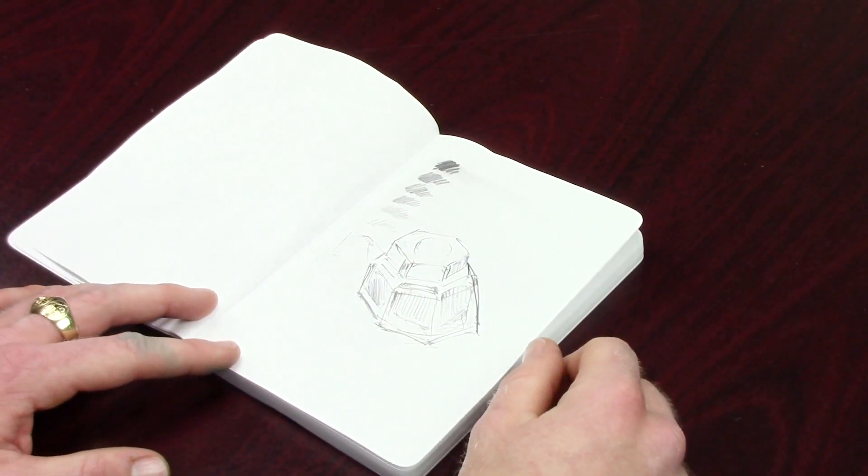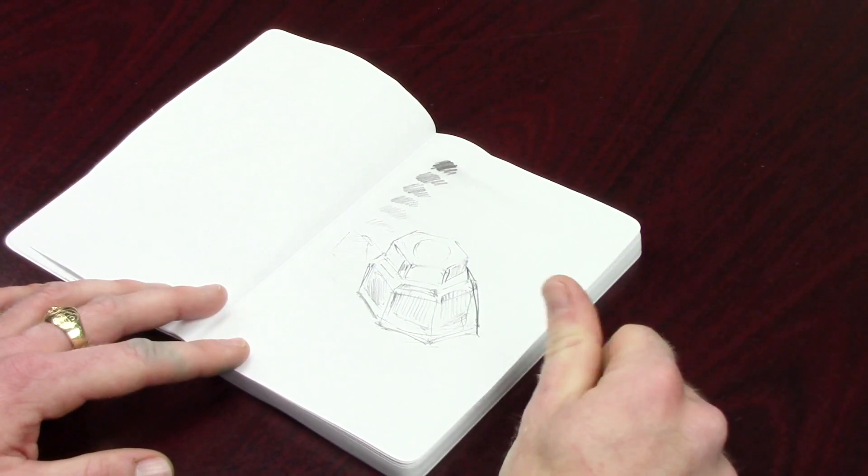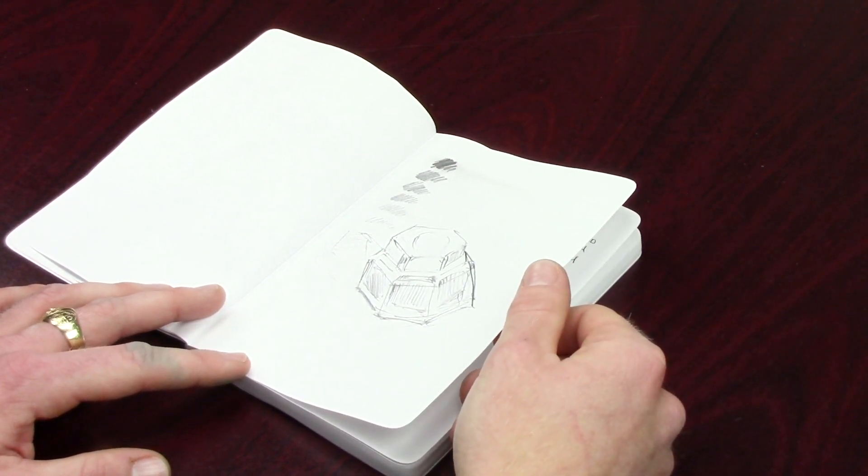And then for pencils, nice toothiness. There was some smearing. This is a Blackwing pencil so when you push really hard there's gonna be some pretty heavy smearing but overall not too bad. So if you're worried about your drawings getting smushed up, I wouldn't worry too much about it.